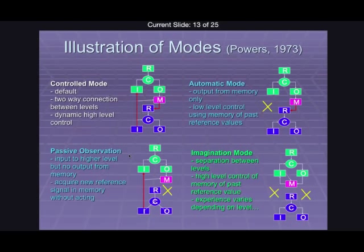The top left one is the control mode — the default mode is a two-way connection between levels, dynamic high-level control. It's as though there are no real boundaries between how high-level you could think of your goals and how low-level you could put them into practice. In an ongoing way, you're adapting and changing, which is the basic mode we've already been talking about.